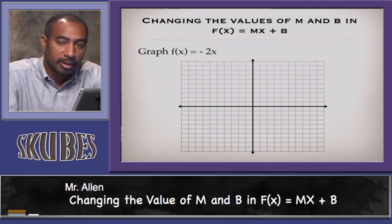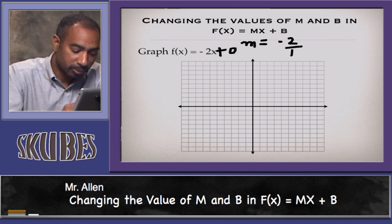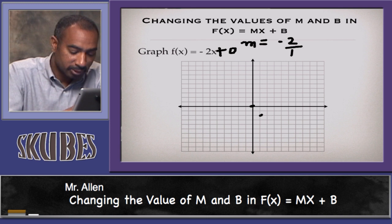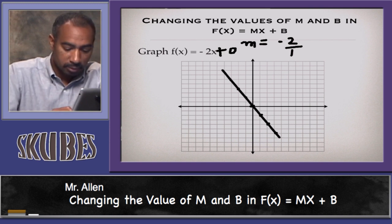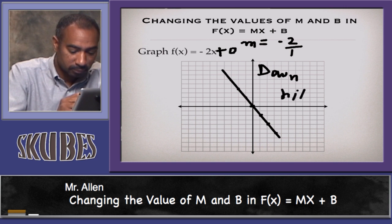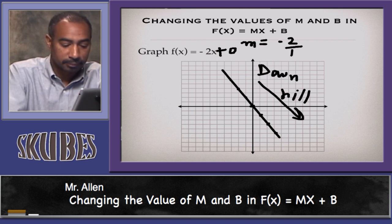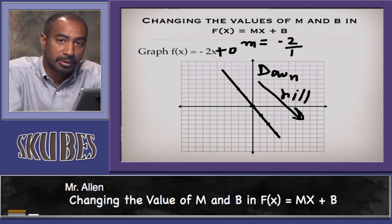Graph f(x) = -2x. The slope is negative 2 and the y-intercept is 0, so you start at the origin. Go to the right 1 and then down 2. Or go to the left 1 and up 2. This line goes downhill. It also crosses through the origin. The only thing that changes from f(x) = 2x is it switches from uphill to downhill — no y-intercept means it goes through the origin.